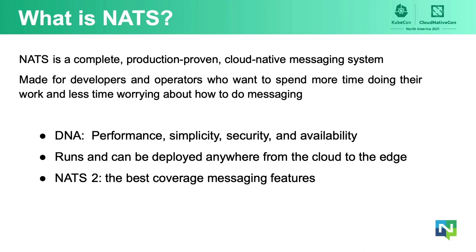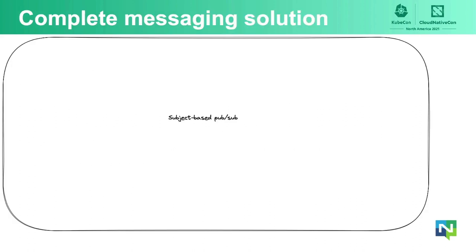NATS 2 is a complete messaging solution because it provides the best coverage of messaging features of any messaging solution. Let me go through a non-exhaustive list of features offered by NATS. The most basic functionality is publish-subscribe using subject-based addressing, with high speed, high fanout, and over 40 different client libraries in as many languages.